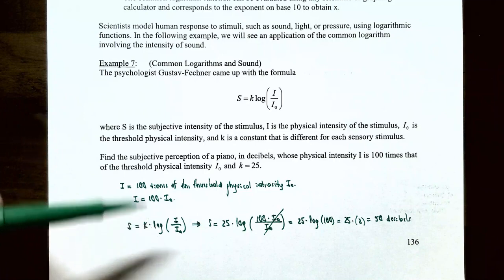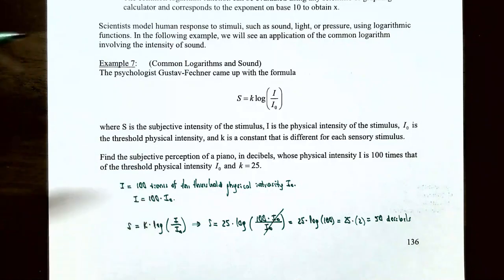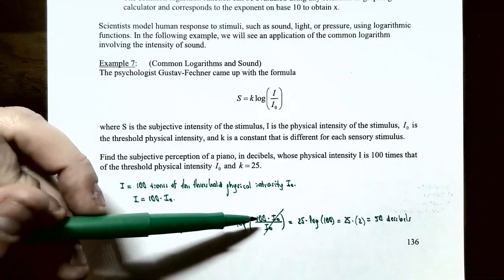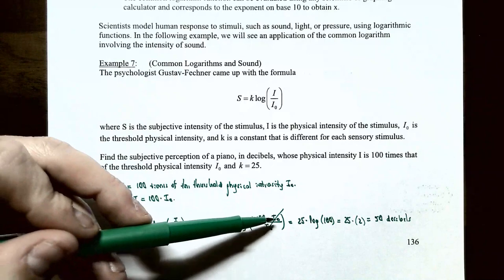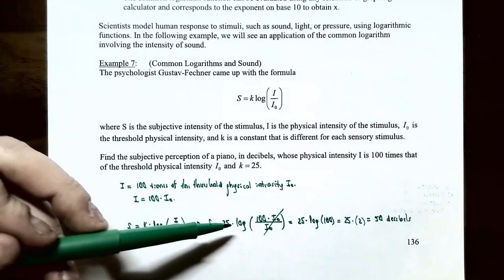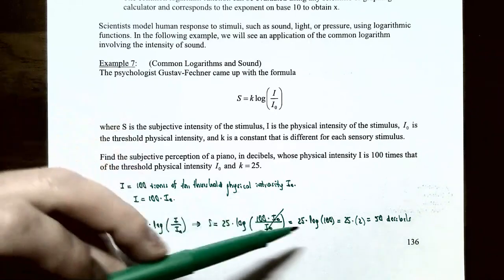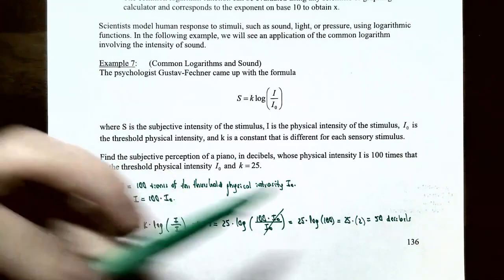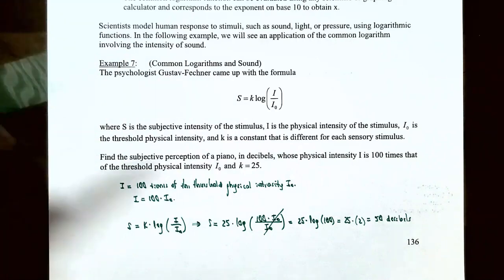Substituting into the formula: s equals k times log base 10 of (i divided by i sub 0). Since i equals 100 times i sub 0, we replace i: s equals 25 times log base 10 of (100 times i sub 0 divided by i sub 0). The i sub 0 factors cancel, leaving 25 times log of 100. Since log of 100 equals 2 (because 10 squared equals 100), we get 25 times 2 equals 50. So the subjective intensity of the stimulus is 50 decibels for this piano.